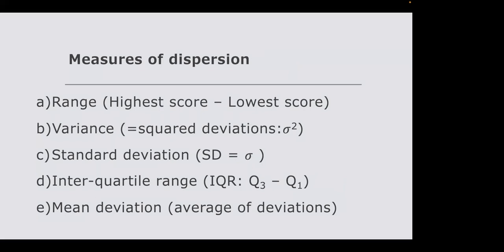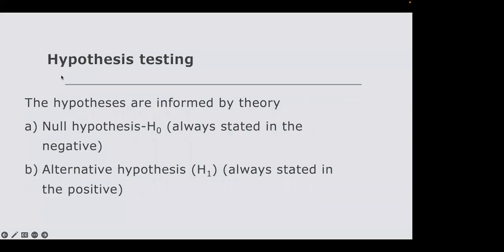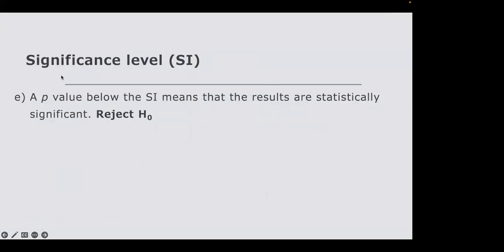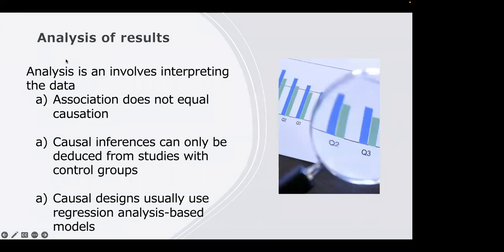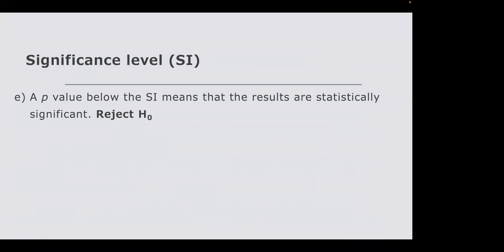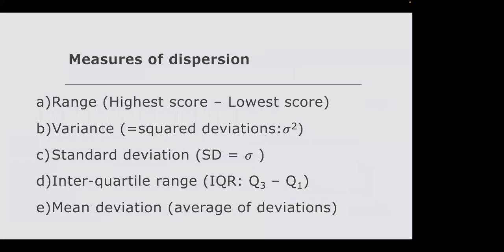Measures of central tendency are called point statistics. For example, if the mean is 16.5, the actual age range in the sample might be 14 to 18. This spread is called dispersion or variability — how variable the sample is. If you are measuring height, the variability is the difference between the shortest and tallest person in the group.